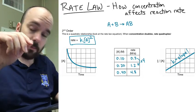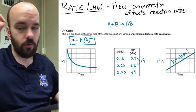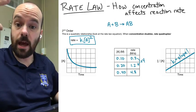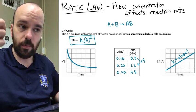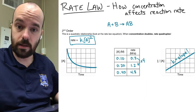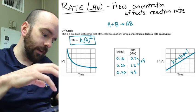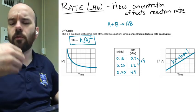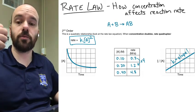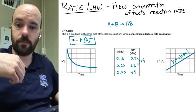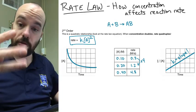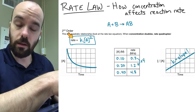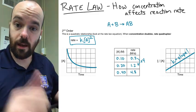To recap: in zeroth order, the rate did not depend on concentration — the rate was the same regardless of how much reactant you had. In first order, the more reactant you had, the faster the rate, and it was a linear relationship — twice as much reactant means twice the rate. In second order, the concentration has a quadratic impact on the rate — twice as much concentration means four times the rate. Those are the three rate orders — zeroth, first, and second — and these rate equations are what we call the rate laws for each order. Hopefully that was helpful!